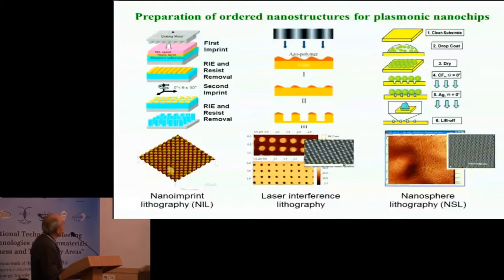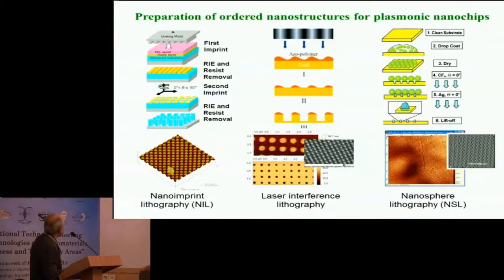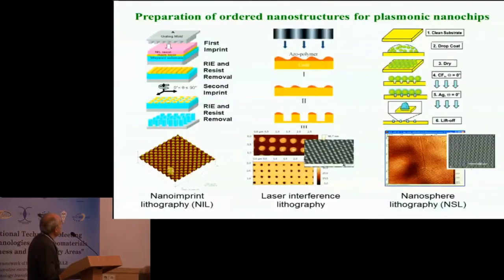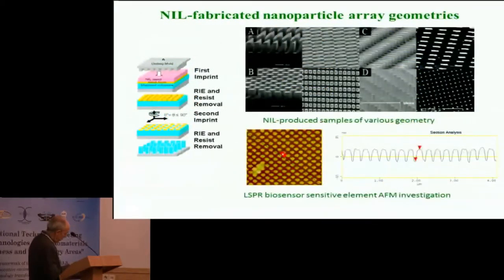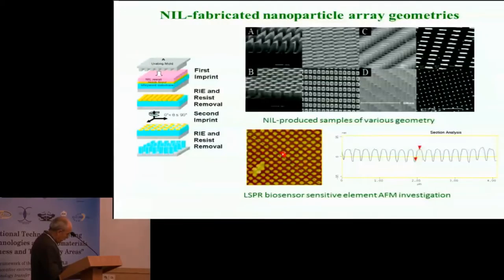To manufacture the nanochips, we used several techniques. To develop nanochips with ordered arrays — which are more preferable — we use three technologies: nano-imprint lithography, laser interference lithography, and nanosphere lithography. These three technologies are very complicated. Under the conditions in Ukraine, it is very difficult to apply them, though the nano-imprint technique is the most preferable, as it allows obtaining nanostructures with very different forms.